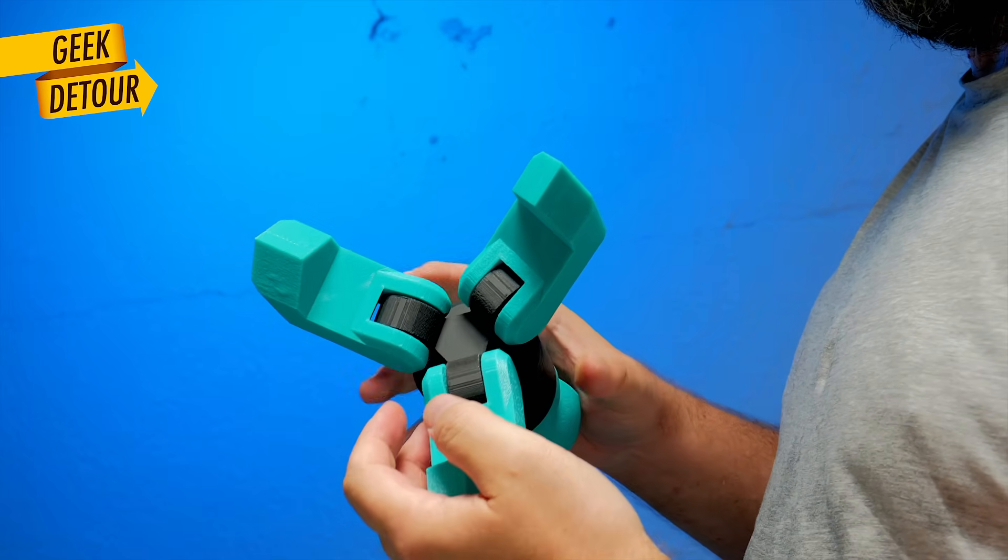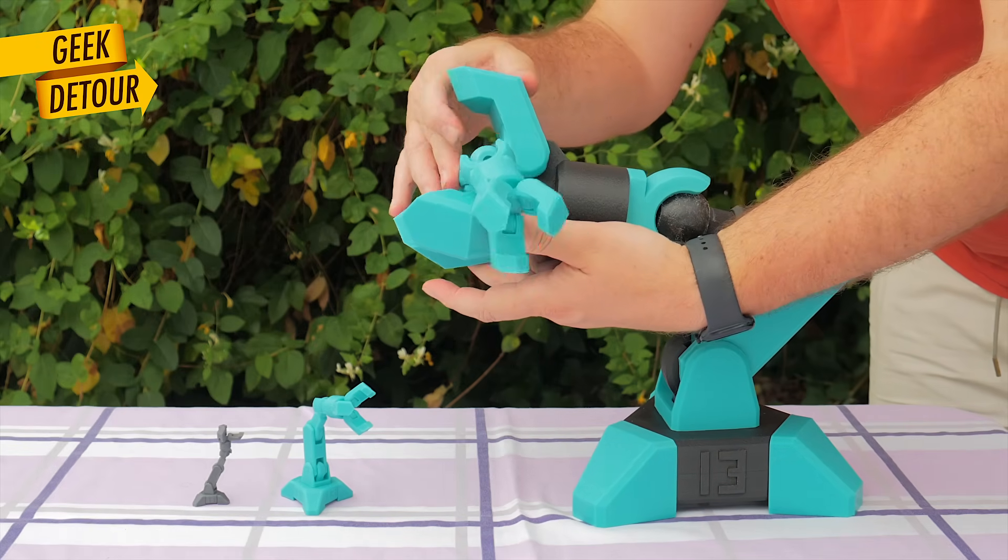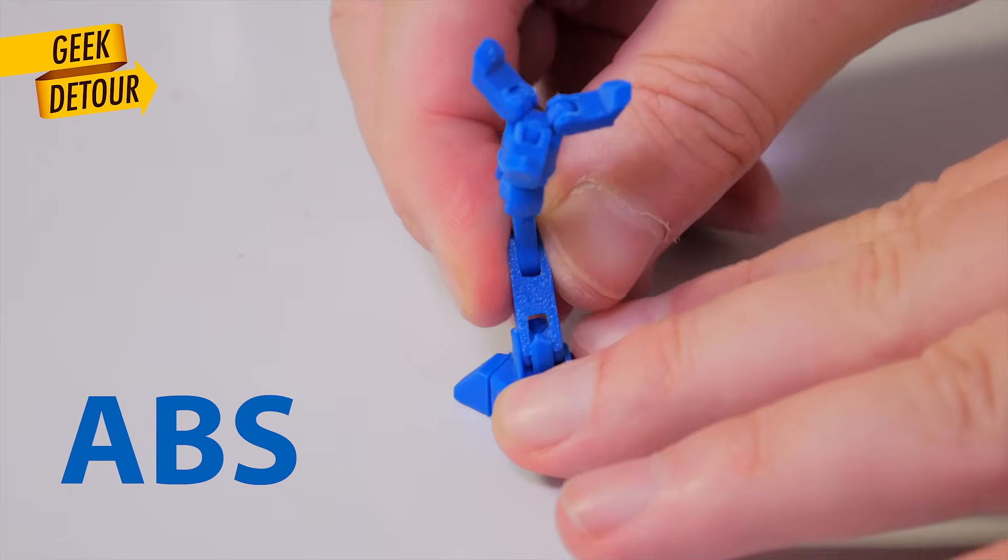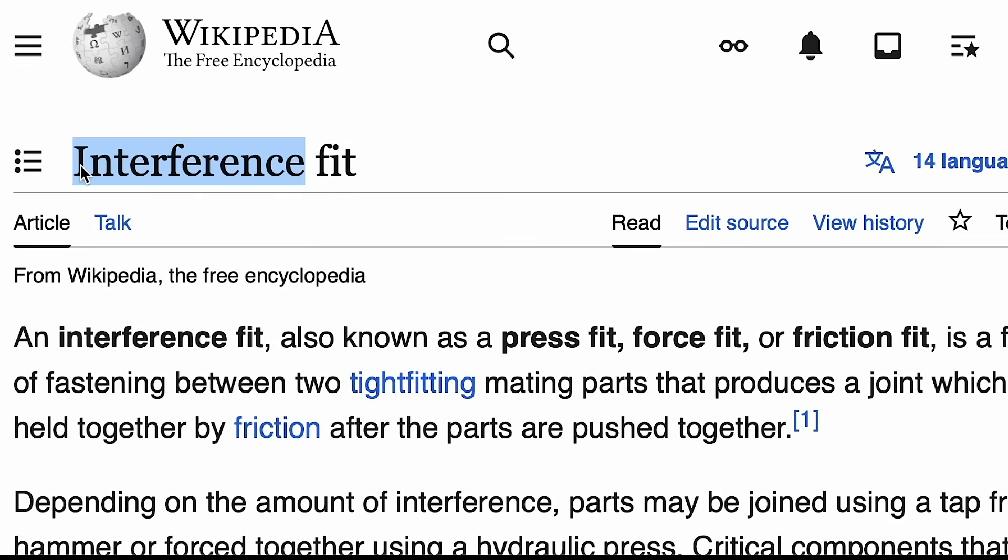So, what is going on here? Why we cannot just use the biggest 3D printer possible and make a giant Grabby the Claw? And why ABS is better than PLA for this type of print? It is because of interference.